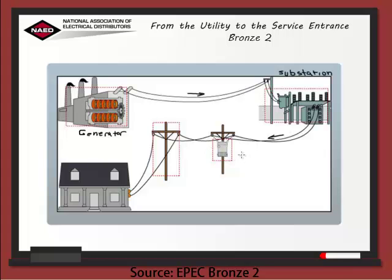This is the transformer. In a typical neighborhood, a 2,200 volt power line connected to a pole transformer will distribute electricity to the individual homes. Here's the power line. The wires carrying electricity from the pole transformer bring the 120/240 volt service to a residence and are connected at the service entrance right here.